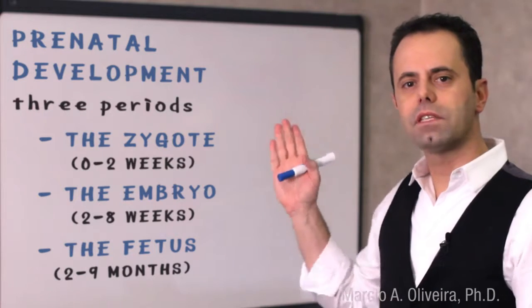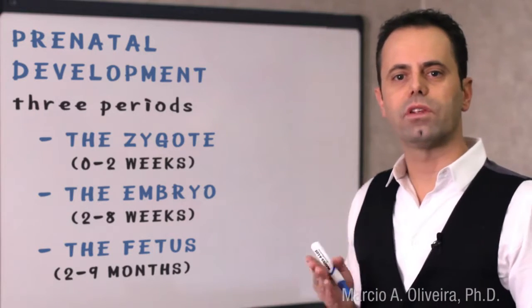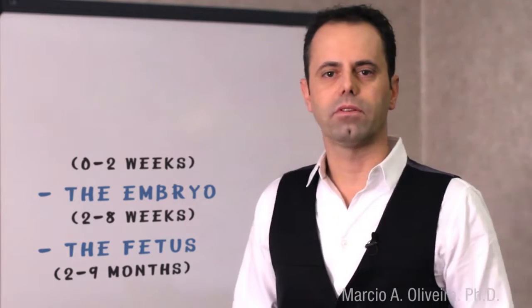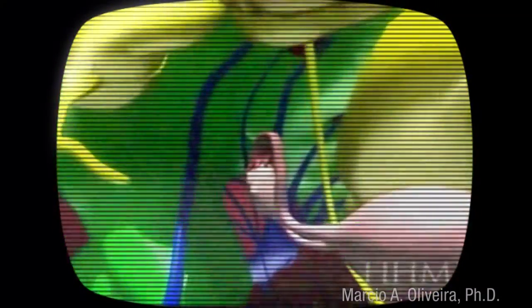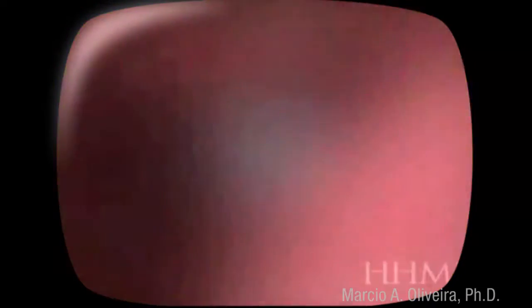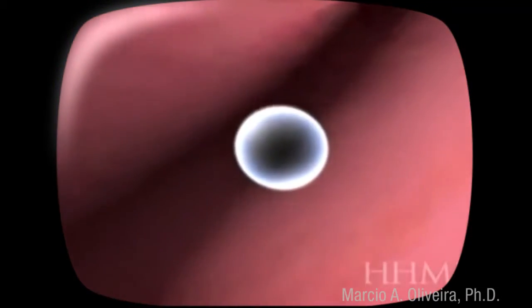Learning about the specific changes during these three periods leads to a better understanding of how various cells transform into different parts of our body. In this video, we'll look at the beginning of development, starting with an unfertilized egg inside the ovary.